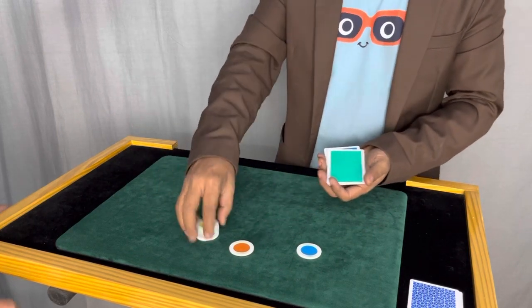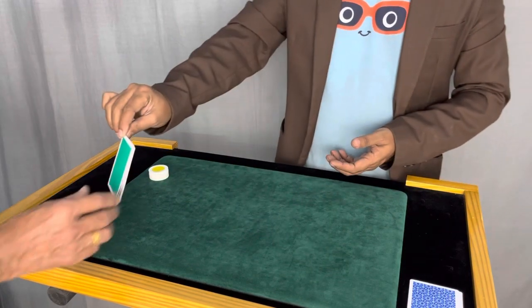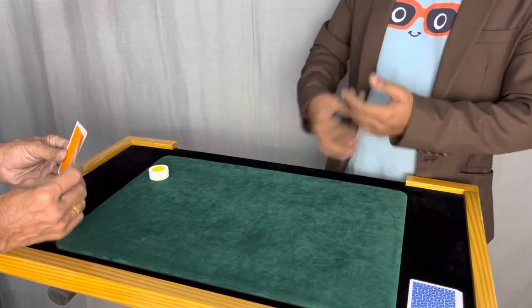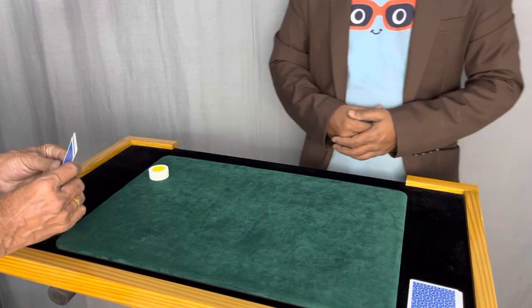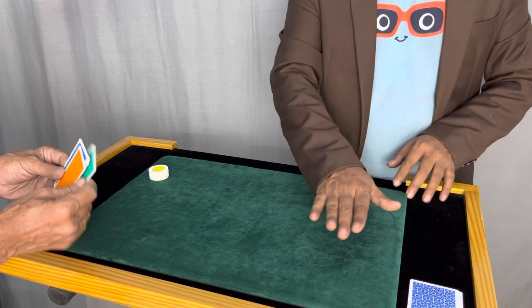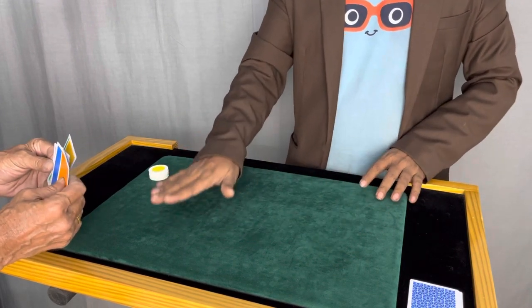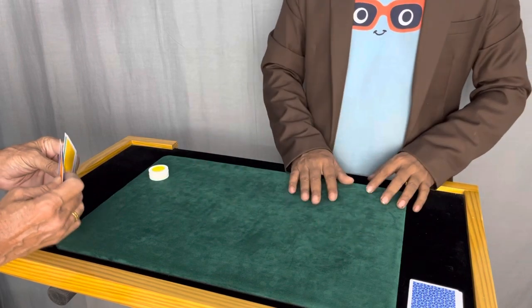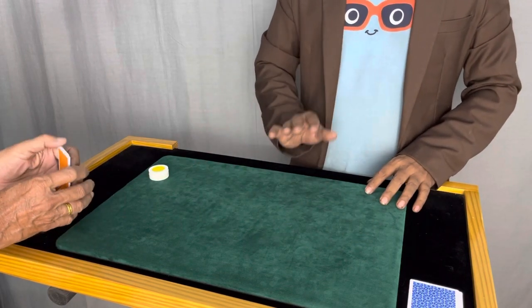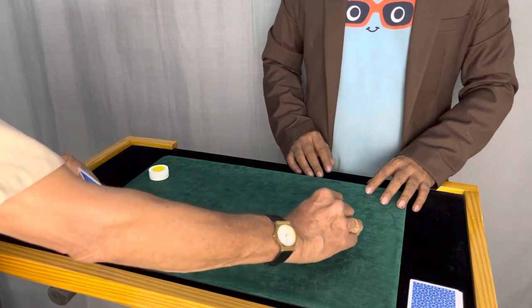This time what you have to do is take these cards and shuffle them randomly as per your choice. Now you're going to place each card on the table but you're going to see the face of the card as you place it. So you will be knowing the face of the cards. Just place them one by one.